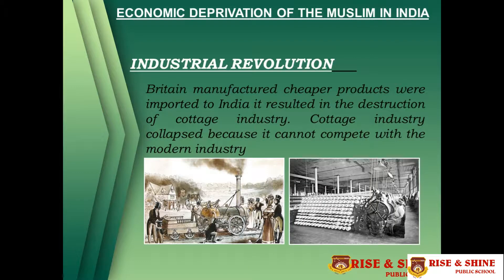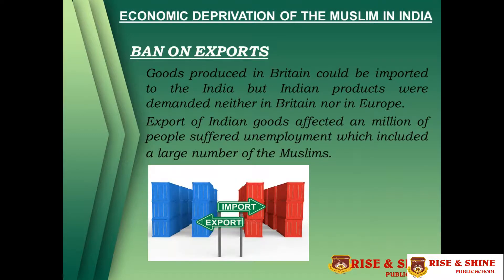Regarding the Industrial Revolution, Britain manufactured cheap products that were imported to India, resulting in the destruction of the cottage industry. The cottage industry collapsed because it could not compete with modern industry. Furthermore, a ban on exports meant that goods produced in Britain could be imported to India, but Indian-produced goods were demanded neither in Britain nor in Europe. The export of Indian goods was affected, and millions of people suffered unemployment, including a large number of Muslims.